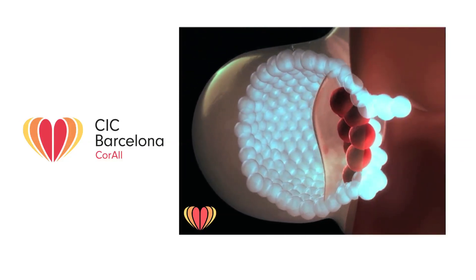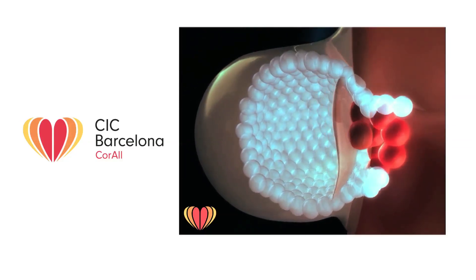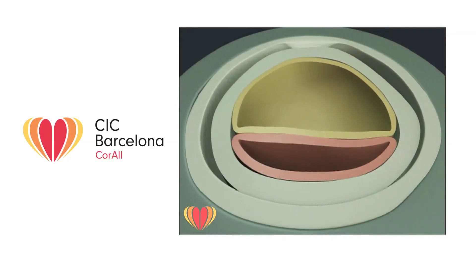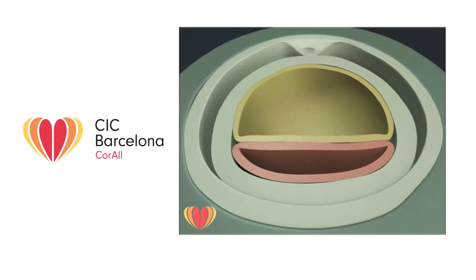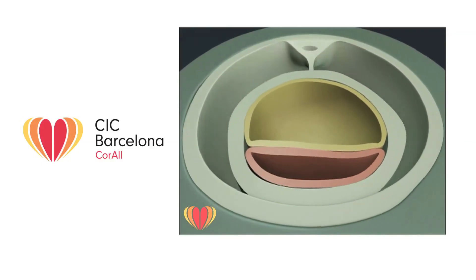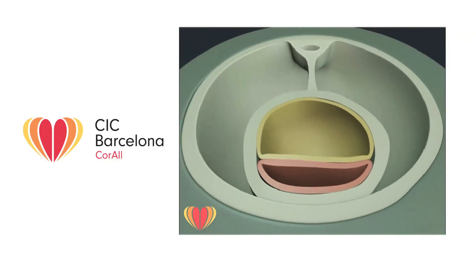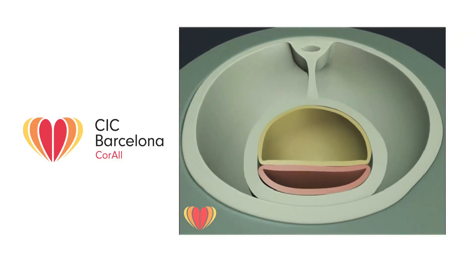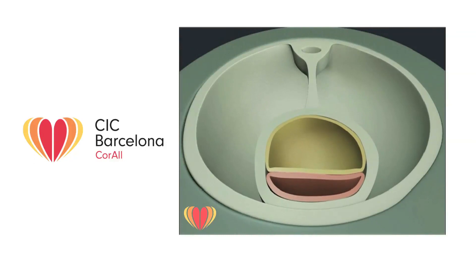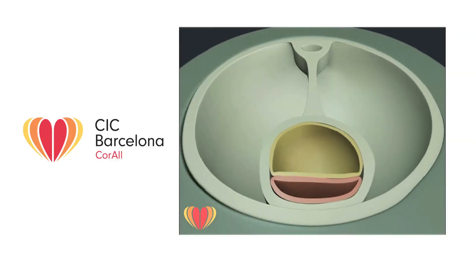The uterus is already prepared to receive the embryo and, during the sixth day after fertilization, it attaches to the uterine wall. Once implantation has occurred, the intimate connection between a mother and a fetus starts and the placenta begins to develop.